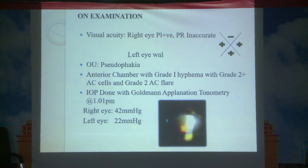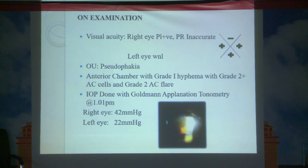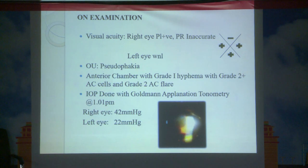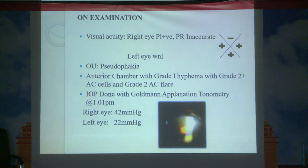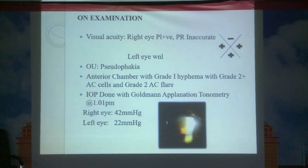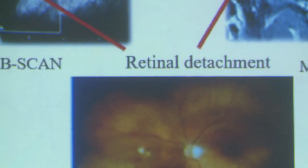On examination, right eye vision was only perception of light with inaccuracy. She had a history of cataract surgery four years ago and was pseudophakic bilaterally. Slit-lamp examination of the anterior chamber showed grade 1 hyphema and grade 2 anterior cells and flare. IOP was 42 mmHg in the right eye via Goldmann applanation tonometry. Left eye findings were normal.